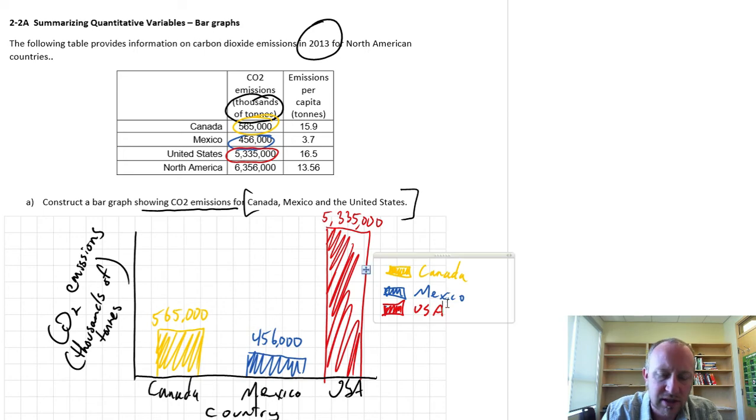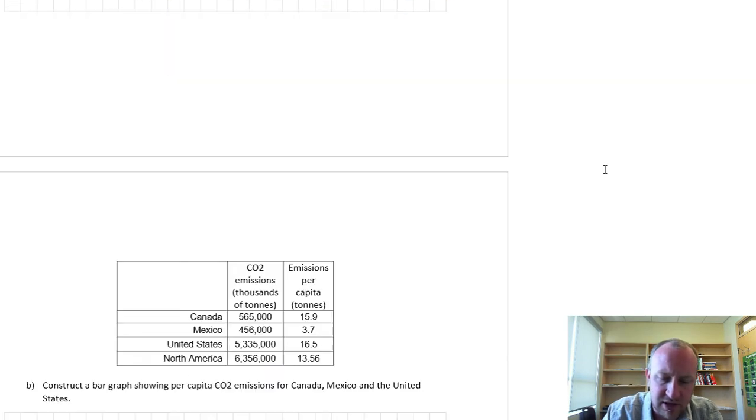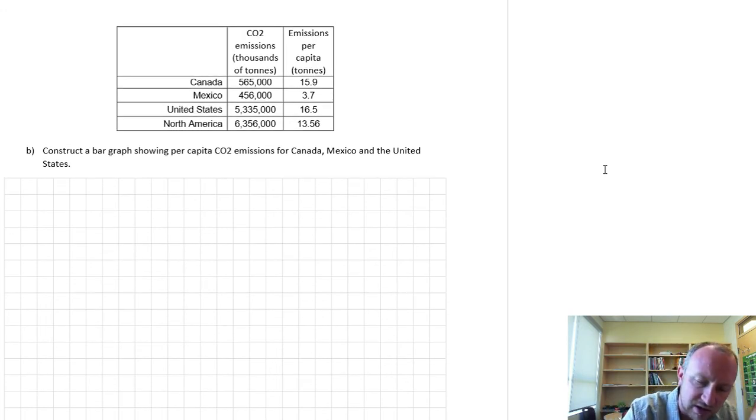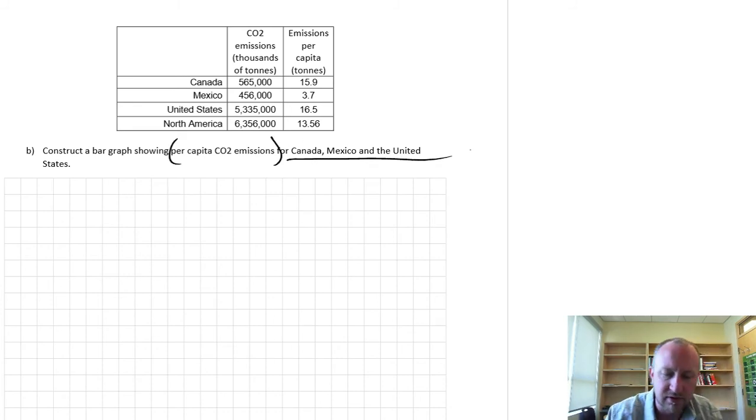The next one that we'll do, just scroll down the page here, very similar, but we're just using a slight variant of the data. Now we're going to look at per capita CO2 emissions for those same three North American countries. So the reason I'm doing this, not just because we need practice producing bar graphs, but also to show how it's important that you really interpret the data properly, and to see how the data might be manipulated in a way to tell a story.